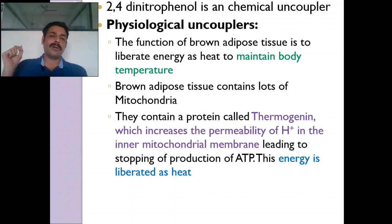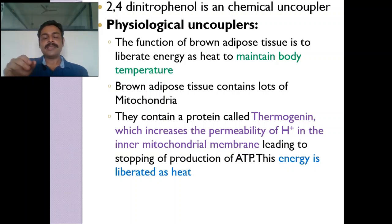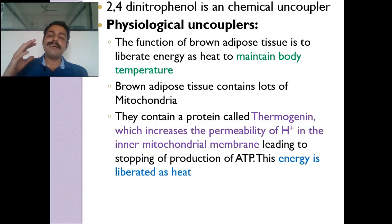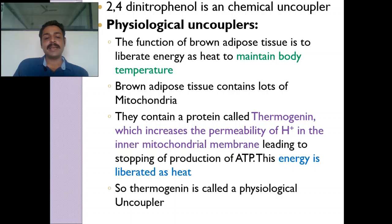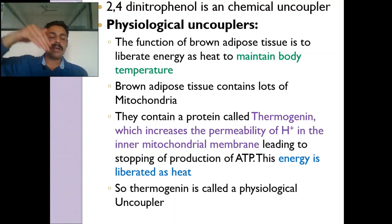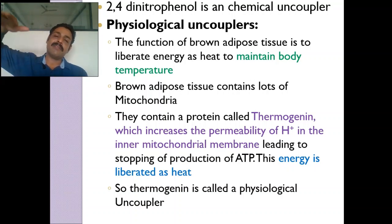Energy is liberated as heat, done by the protein thermogenin. Thermogenin increases the permeability of hydrogen ions, so hydrogen ions enter the inter-mitochondrial space via the inner mitochondrial membrane without going via ATP synthase — ATP synthase becomes useless. Uncoupling: the top row shows Complexes I, III, IV as electron transport chain, and Complex V is oxidative phosphorylation. Uncoupling of ETC and oxphos is done by uncouplers.